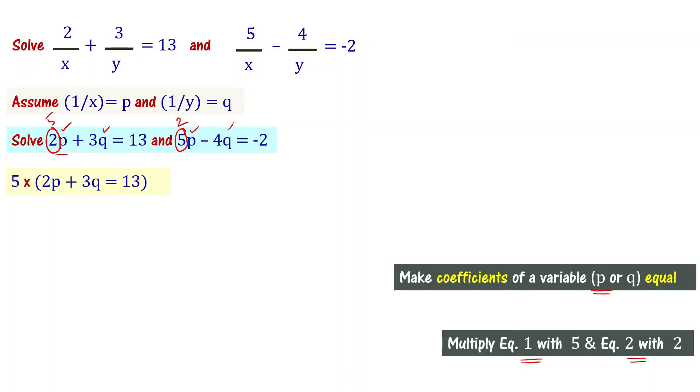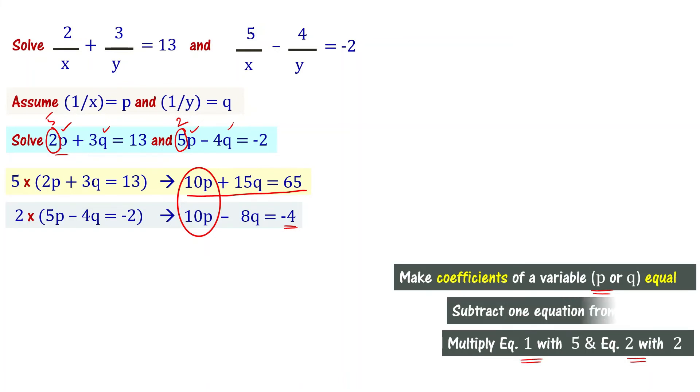5 times 2p plus 3q equal to 13. This is the first equation. We are multiplying with 5. So, the equation is now 10p plus 15q equal to 65. Multiply the second equation by 2. 10p minus 8q equal to minus 4. Look at the coefficients of p: 10 and 10. Now we can eliminate a variable. In elimination method, let us subtract one equation from the other.